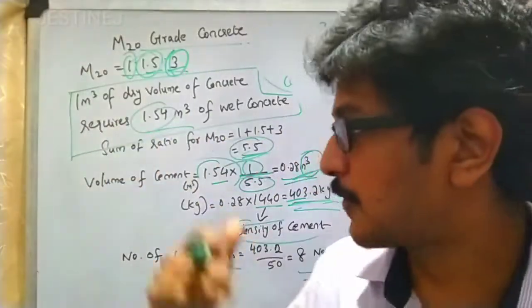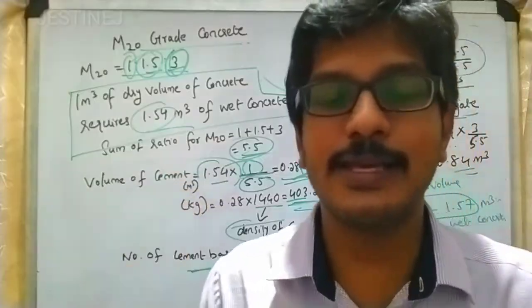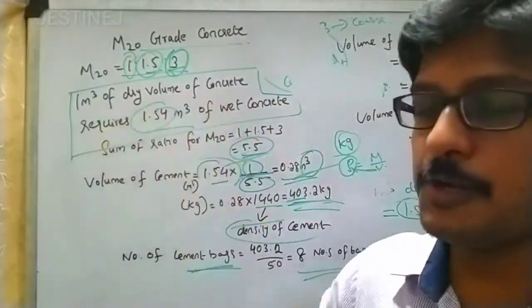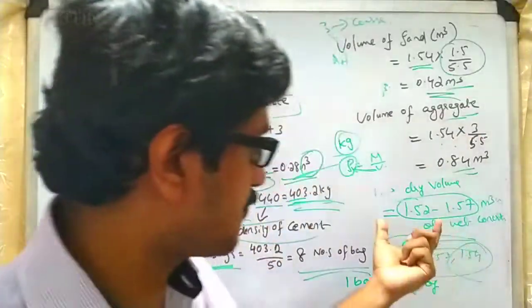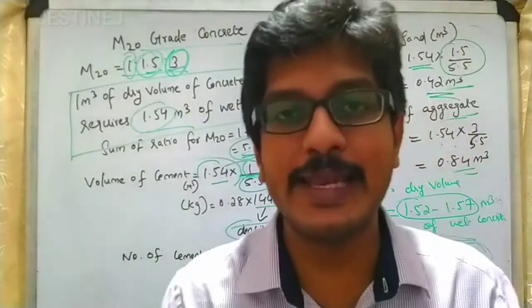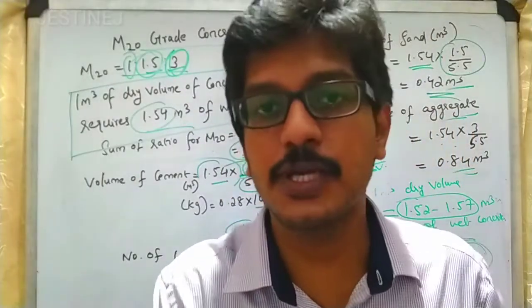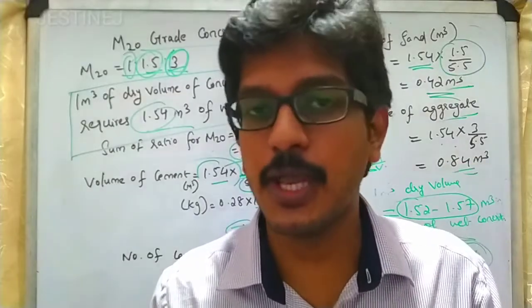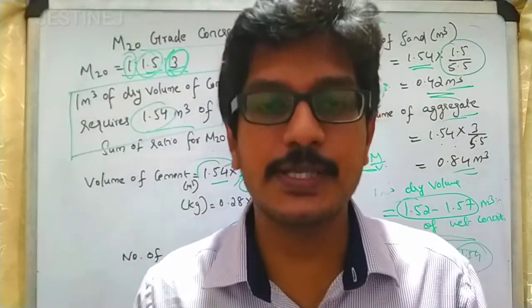So these are the various cases for calculation of volume of cement, aggregate, and sand using this 1.54 ratio, or you can use values from 1.52 to 1.57. If you know this procedure, you can easily calculate the quantities for other grades of concrete. You must know the ratio as well. With this, we will wind up today's section. Thank you.